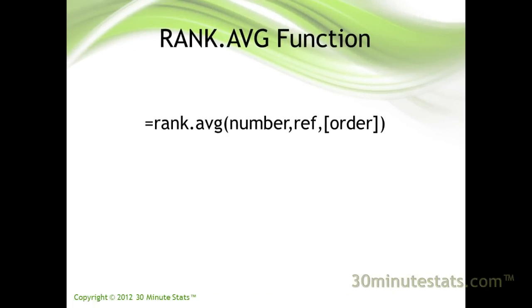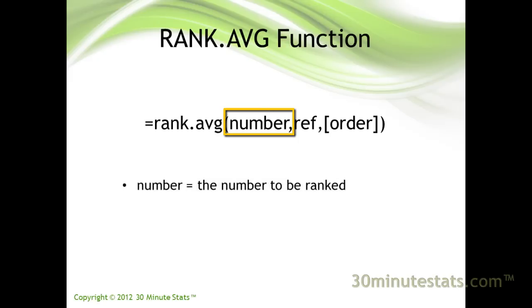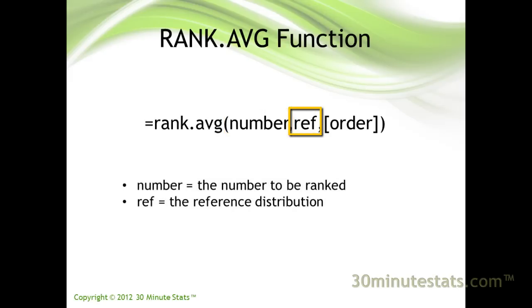The rank.avg function takes the following form. Enter the function name rank.avg, then inside the parentheses are three arguments. The number is the cell reference to the number you want ranked. Ref is the reference distribution you want the number compared to — in other words, we want to know what rank does the number occupy in the reference list. Be careful when specifying the ref argument, since this will often need to be an absolute reference.